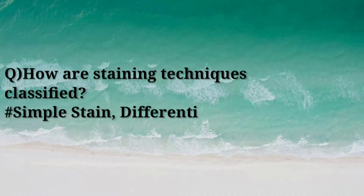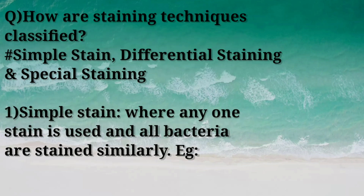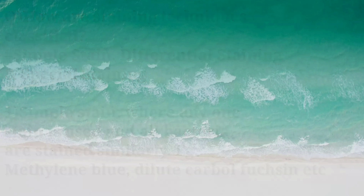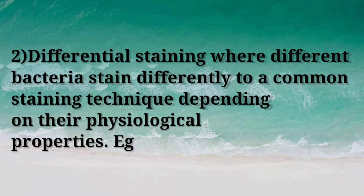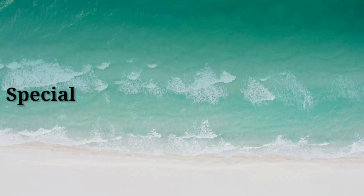Question: How are staining techniques classified? Answer: Into simple stain, differential staining, and special staining. First, simple stain — where any one stain is used and all bacteria are stained similarly; examples include methylene blue and dilute carbolfuchsin. Second, differential staining — where different bacteria stain differently depending on their physiological properties; examples include gram stain and acid-fast staining.